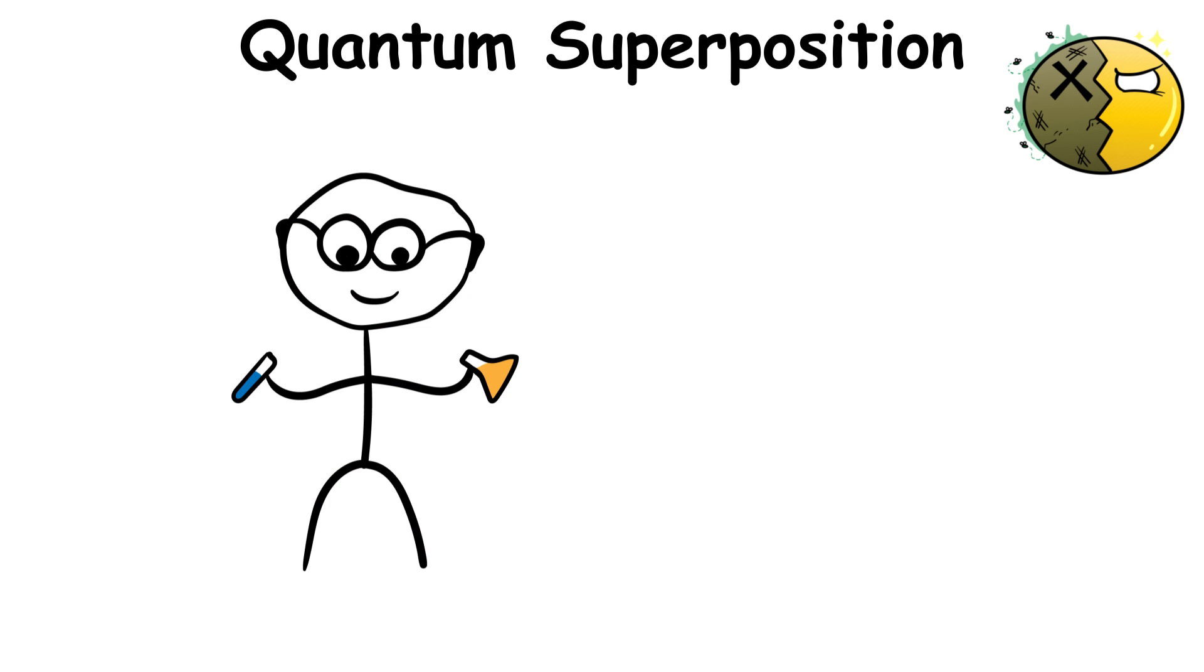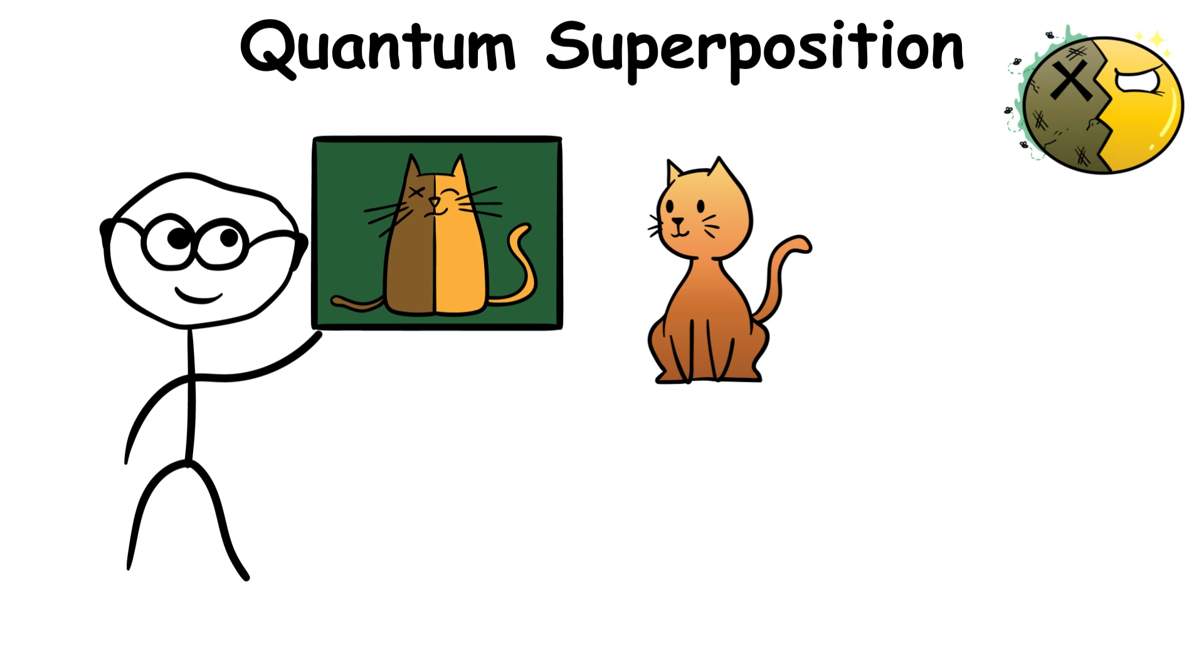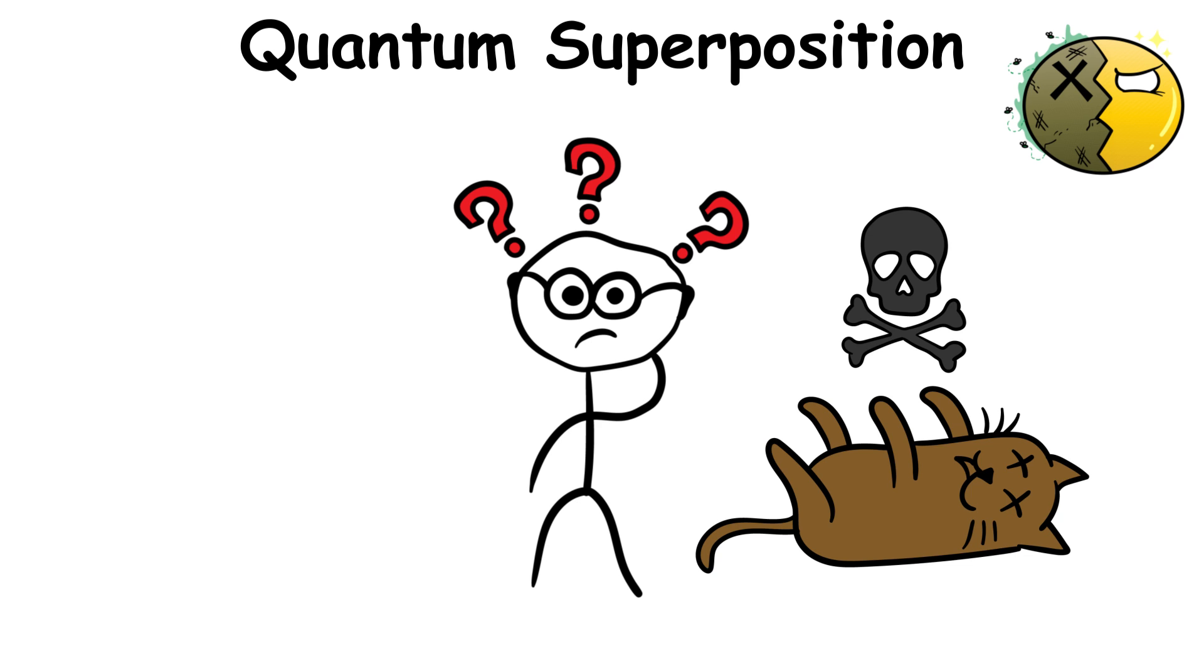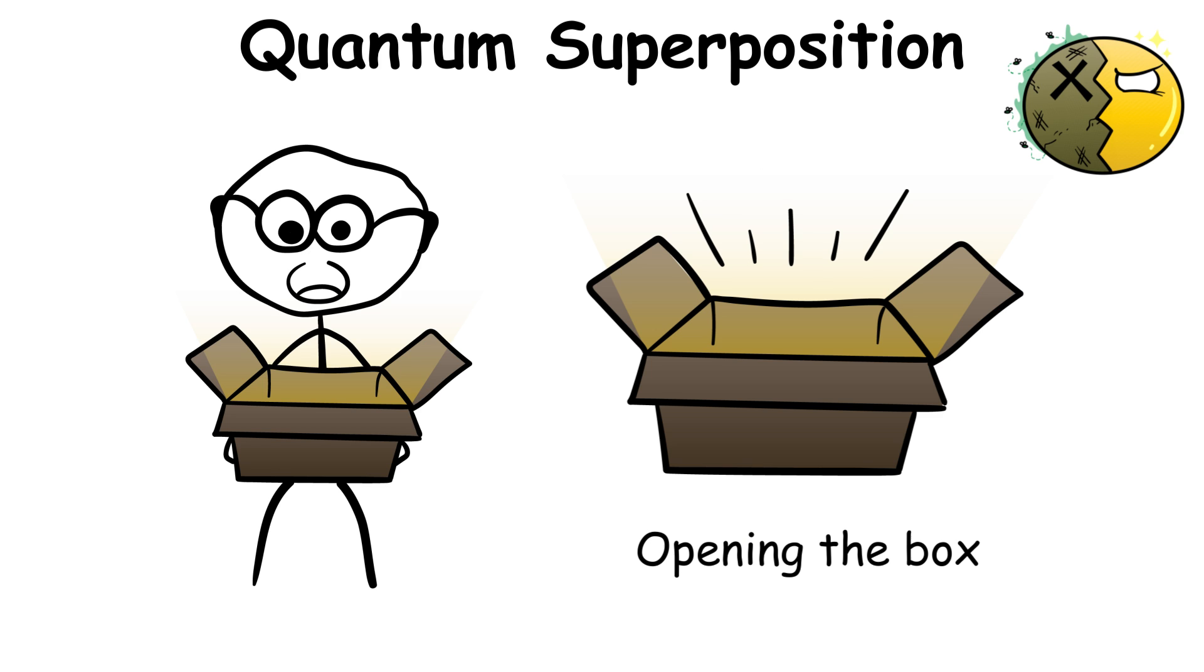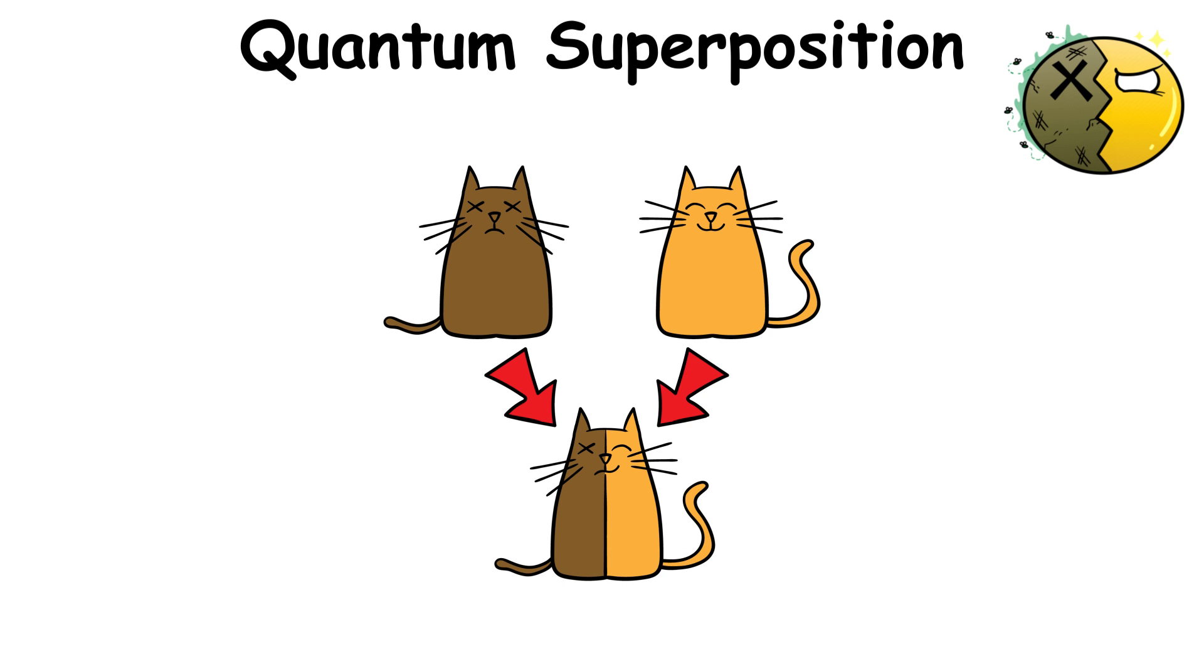The perfect example of an experiment that uses this concept is Schrodinger's cat. This experiment involves a cat placed inside a sealed box. Its fate is dependent on a dangerous particle in a superposition. The catch here is that no one knows if the particle killed the cat or if it survived. Only when someone opens the box will the cat's fate be revealed. So before opening the box, the cat is dead and alive, putting it in a superposition state.